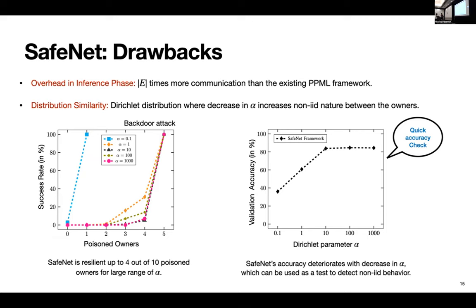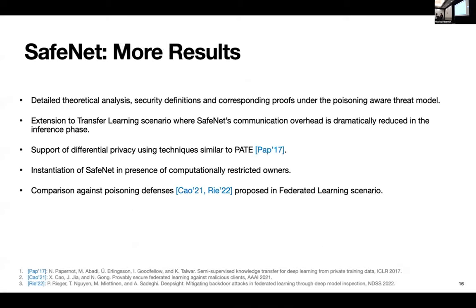However, on the right, what you'll see is SafeNet accuracy also goes down as the non-IID nature increases. But that's a good thing for us because what you can do is you can initially test the SafeNet framework in the beginning, check the validation accuracy. If you think the validation accuracy is too low, then you can remove the SafeNet framework from it and go back to your traditional training. And because as I showed in the previous slide that the training was so fast, that it doesn't create so much overhead in the training procedure.